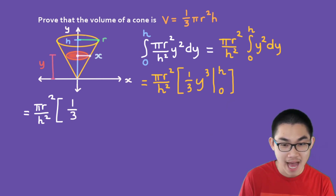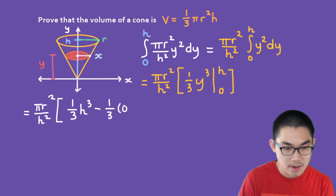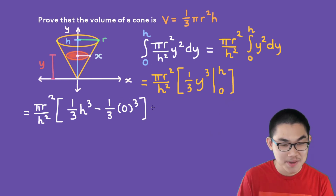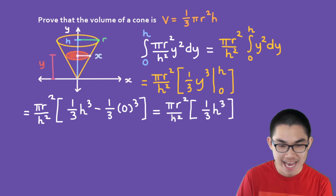Now we substitute the bounds. Plugging in h gives 1/3 × h³, and subtracting the lower bound gives 1/3 × 0³ = 0. So the expression becomes πr²/h² × 1/3 × h³. We can cancel h² in the denominator with h³ in the numerator, leaving one factor of h.